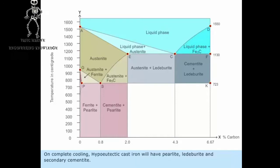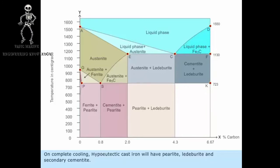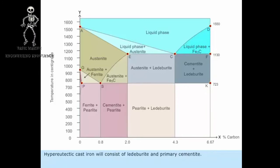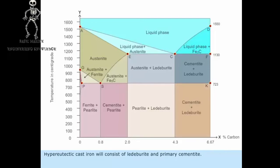On complete cooling, hypoeutectoid cast iron will have perlite, ledeburite, and secondary cementite. Hypereutectoid cast iron will consist of ledeburite and primary cementite.